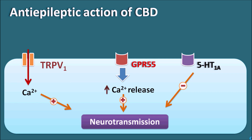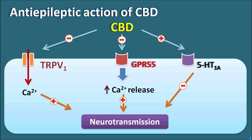Cannabidiol can affect neurotransmission by acting on all these targets. It can block TRPV1 channels thereby inhibiting neurotransmission, and it can also block GPR55 receptors. At the same time it stimulates the 5-HT1A receptor by acting as an agonist, thereby inhibiting neurotransmission. Because of all these actions cannabidiol can show its anti-epileptic activity. Apart from these, cannabidiol can also show effects on other neurotransmitters to further control epilepsy.